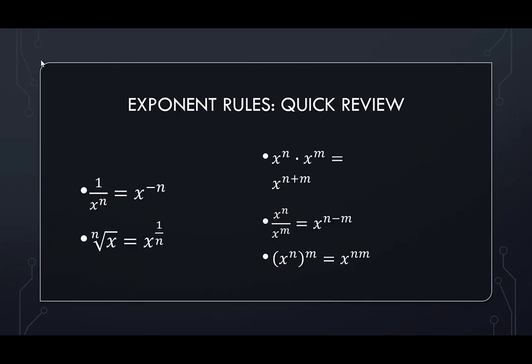Let's do a quick review of exponents. 1 over x to the n is x to the negative n. The nth root of x is equal to x to the 1 over n. When I multiply two exponents that have the same base, I add their exponents. So x to the n times x to the m will be x to the n plus m.